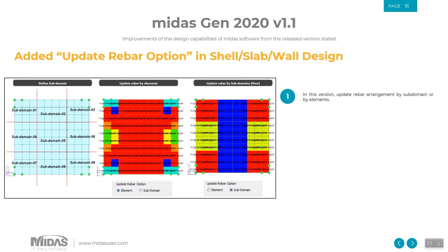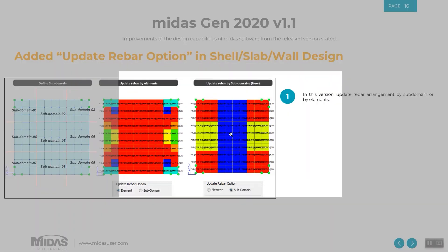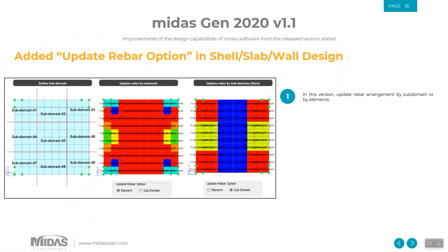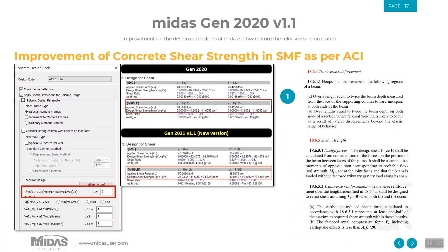Added options like the update rebar option for slabs or walls are now considered in plate elements for better checking of components. You can now easily update the rebar based on element or based on the sub-domain. Additionally, improvements on shear strength in the special moment frame per ACI at the midsection — including the concrete shear at the midsection of beams or columns — are now being considered in the Midas Gen 2020 version 1.1 release.